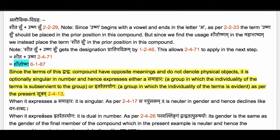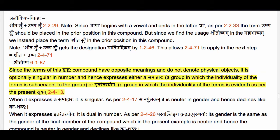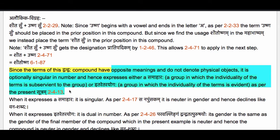Since the terms of this Dvandvaha compound have opposite meanings and do not denote physical objects, it is optionally singular in number and hence expresses either a Samaharaha or Itare Tarayogaha as per the present Sutram 2.4.13. So the conditions for applying Sutram 2.4.13 are satisfied — we do have the terms of the Dvandvaha compound which express opposite meanings and they are not referring to physical objects.